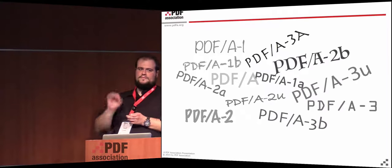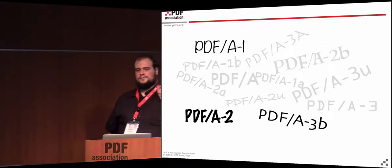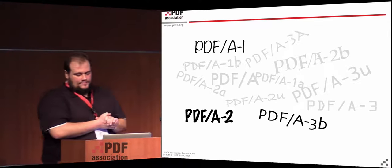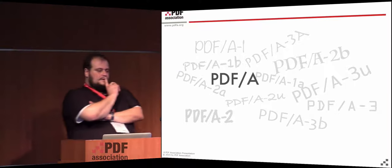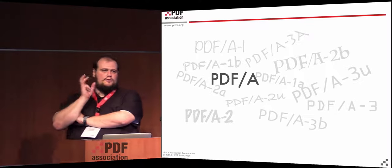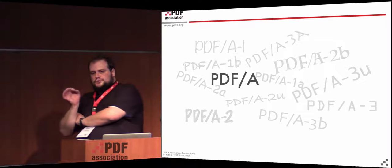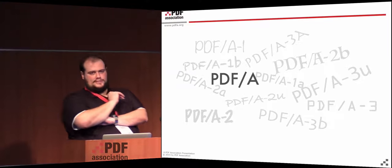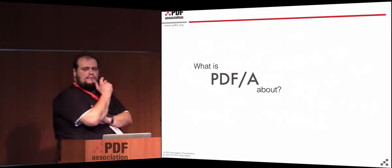I'd like to reduce the whole discussion to fewer things — basically to PDF/A-1, A2, and 3B. And even more, I'd like to reduce our discussion to PDF/A in general. A lot of people are confused about all those terms in the area of PDF/A — about the different versions, the different conformance levels. They tend to stop thinking about what PDF/A is because they get a little bit lost in all those details. So let's step back a little bit.